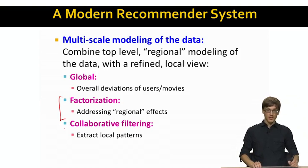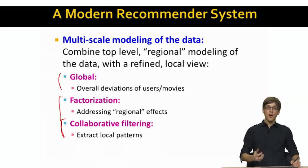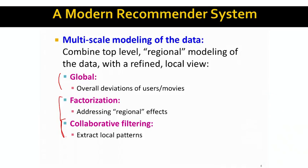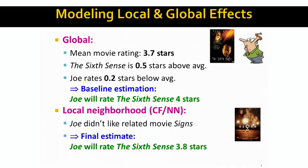Before going to the main body, let me talk about global modeling and collaborative filtering. Global modeling means computing an average rating over movies and users. For example, the mean movie rating on Netflix is 3.7 stars. The Sixth Sense movie is rated half a star above average, while a critical user like Joe tends to rate things about 0.2 stars below average.